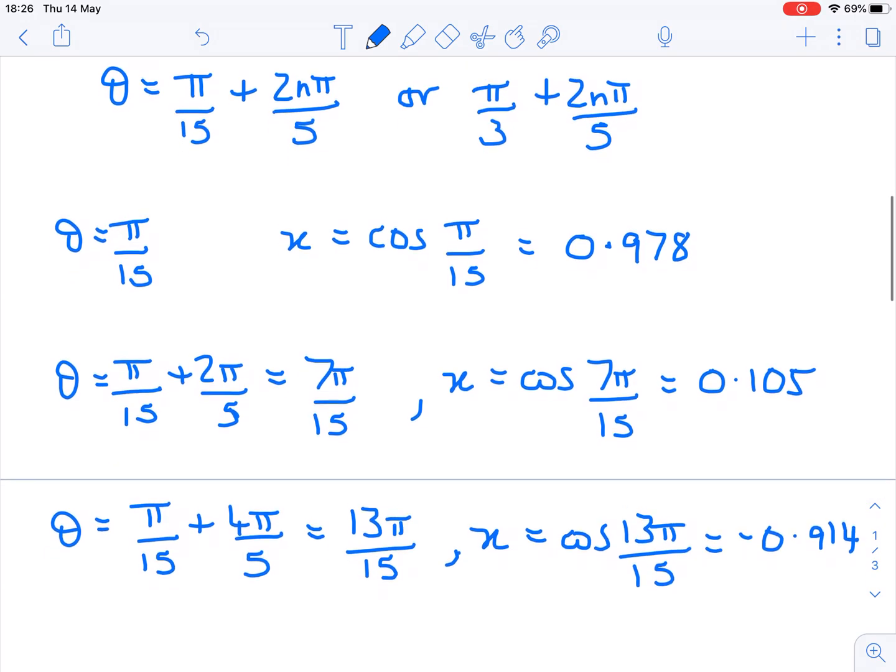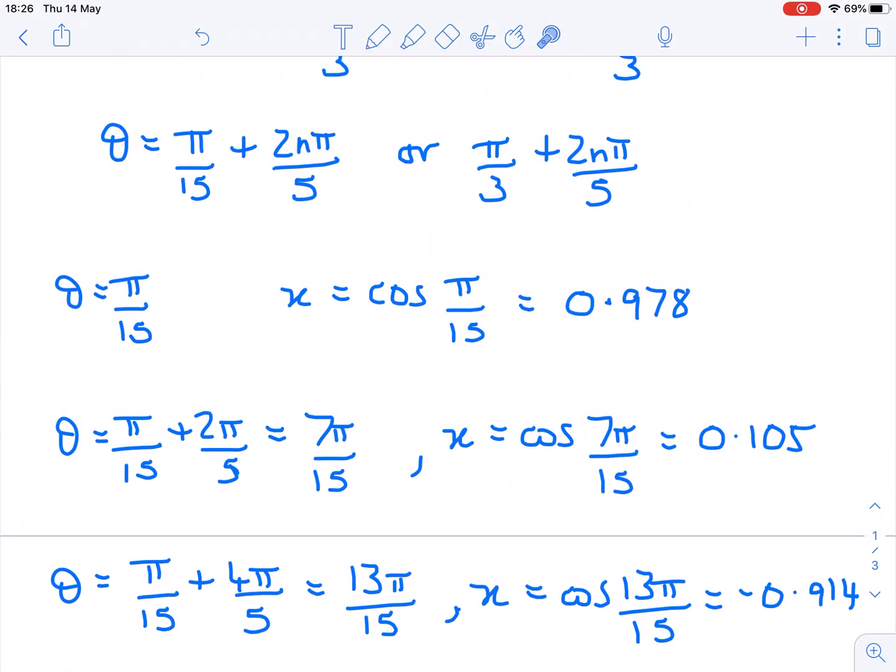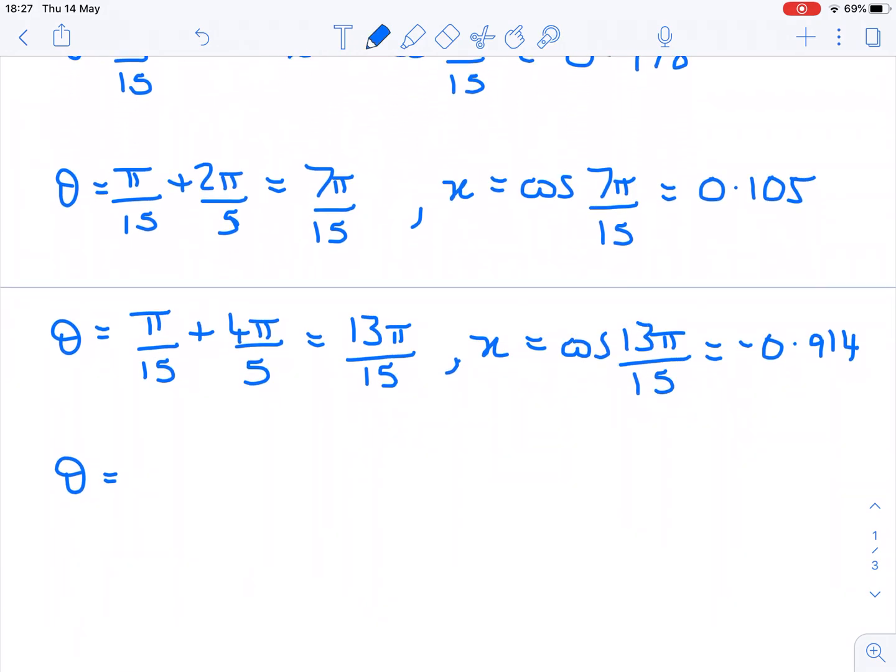So I've got three distinct solutions so far from three different values of θ. If I add another 2π/5, I'm going to be outside the normal, I'm going to be over π on my θ value. So I'm not going to do that for a minute. I'm going to take my other set of solutions. So I said that my solutions could be based around π/15 or they could be based around π/3 from the symmetry of the cosine curve. I'm going to start with that π/3 value now. So when θ takes the value π/3, x takes the value cosine π/3, which is exactly a half.